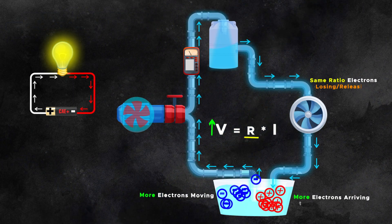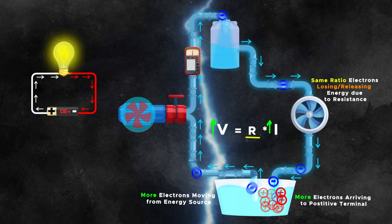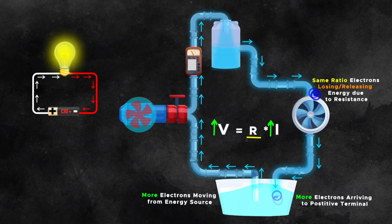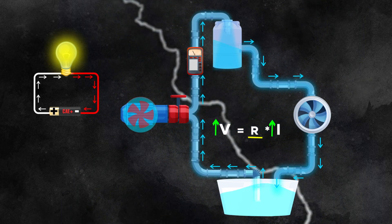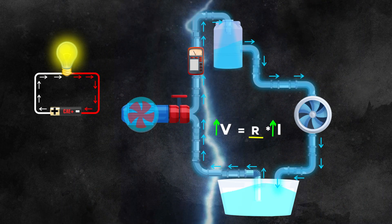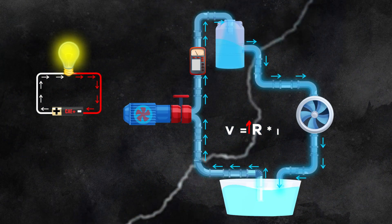When the voltage, represented by a larger and stronger pump, increases while the resistance, illustrated by the turbine, remains unchanged, more electrons can be transported to the upper pool within a given time. Consequently, more electrons can flow down to the lower pool per unit of time, resulting in a higher current, which aligns with the VRI formula.